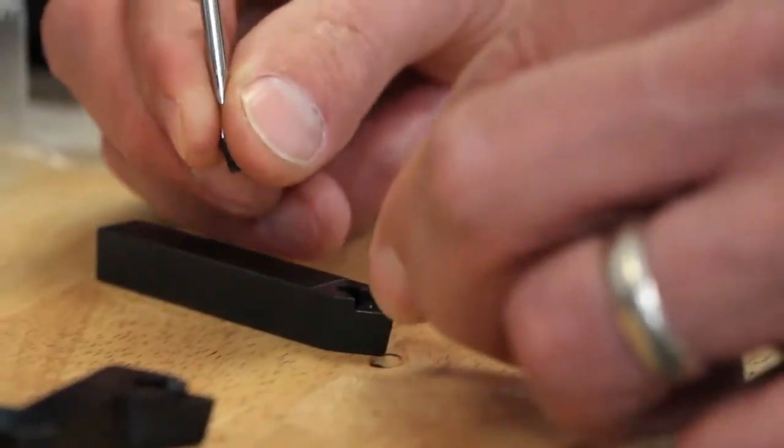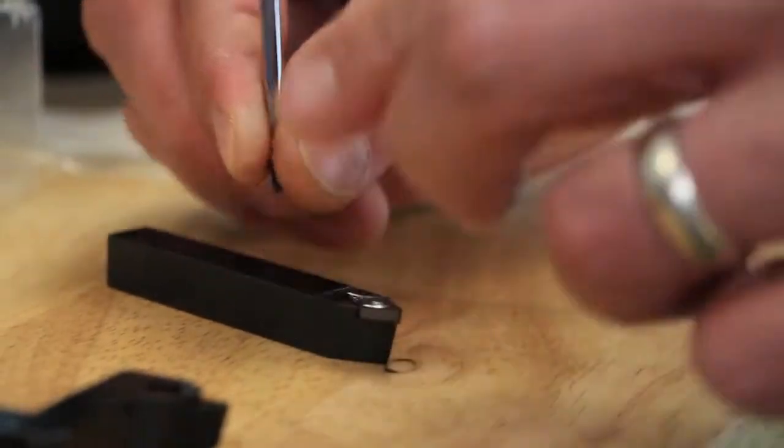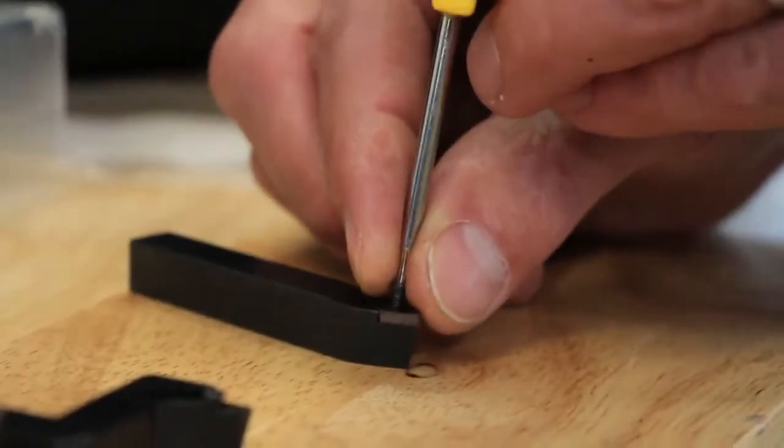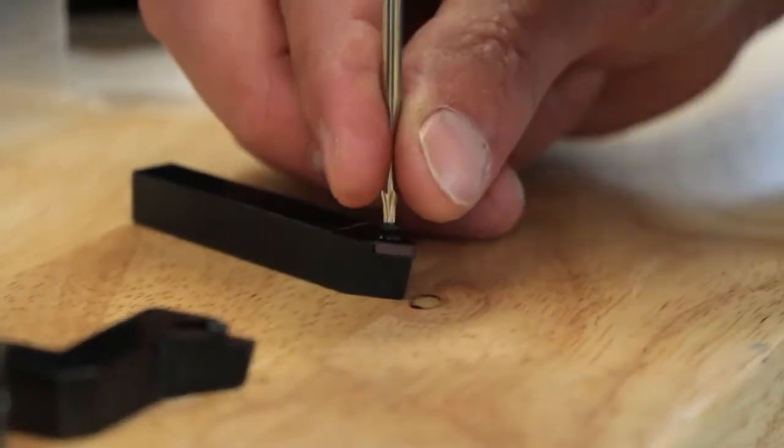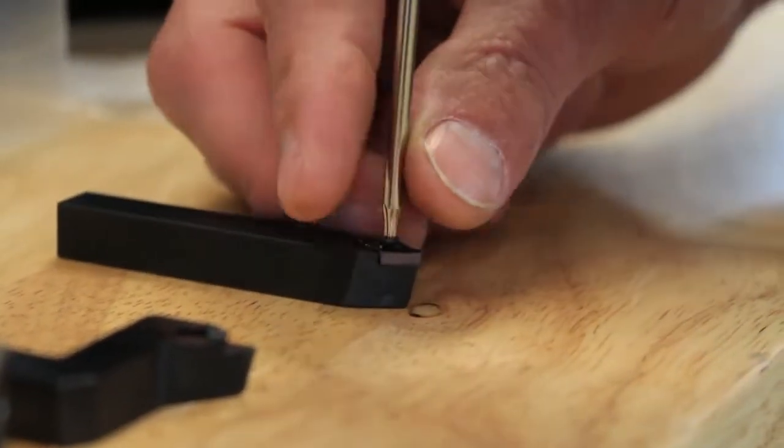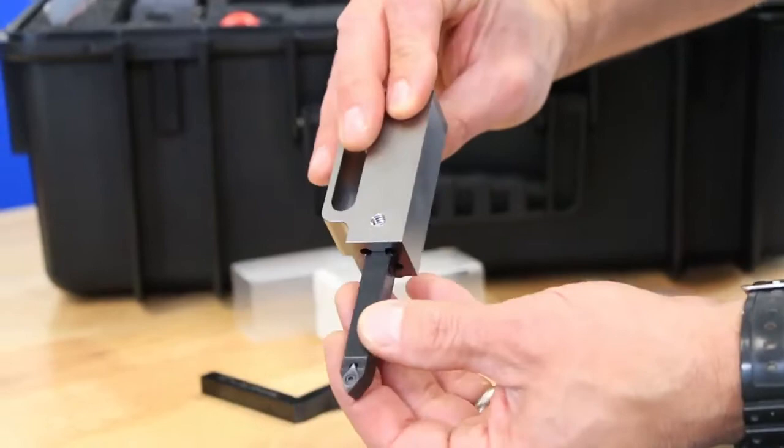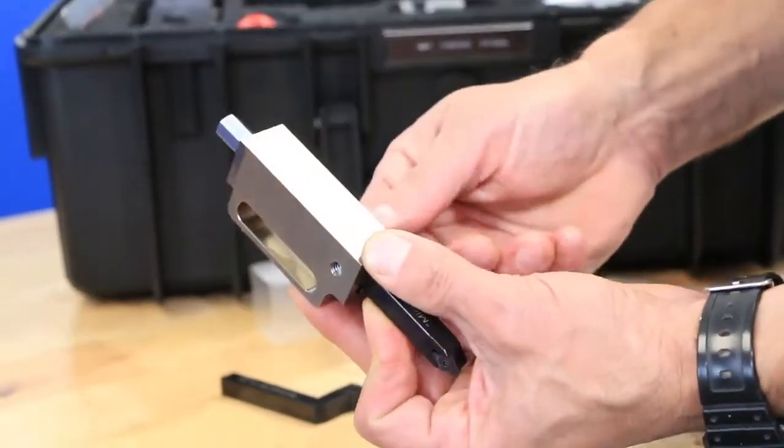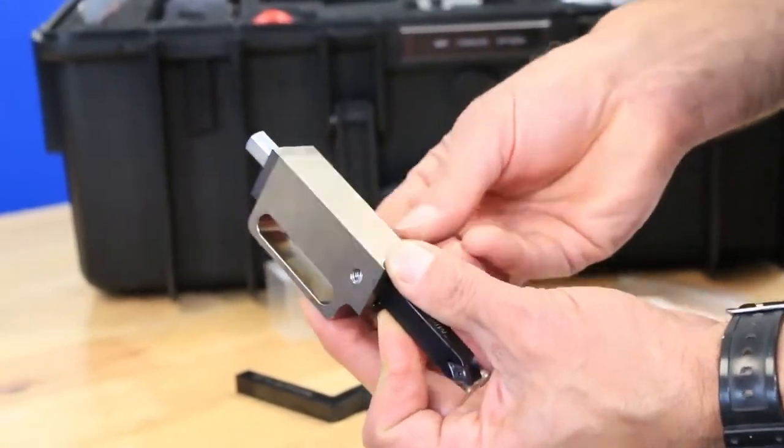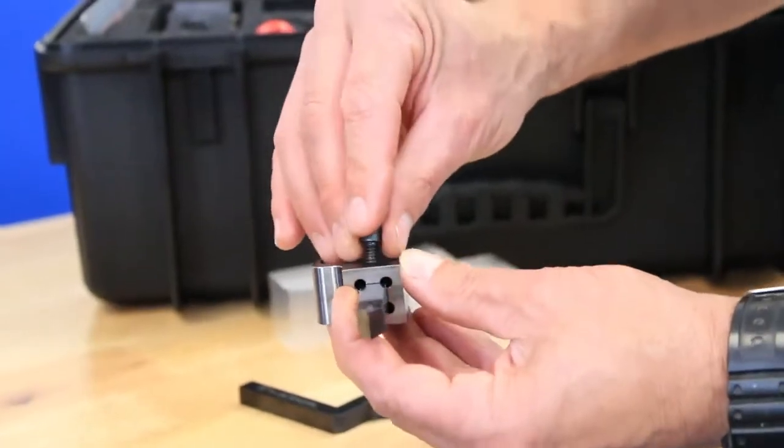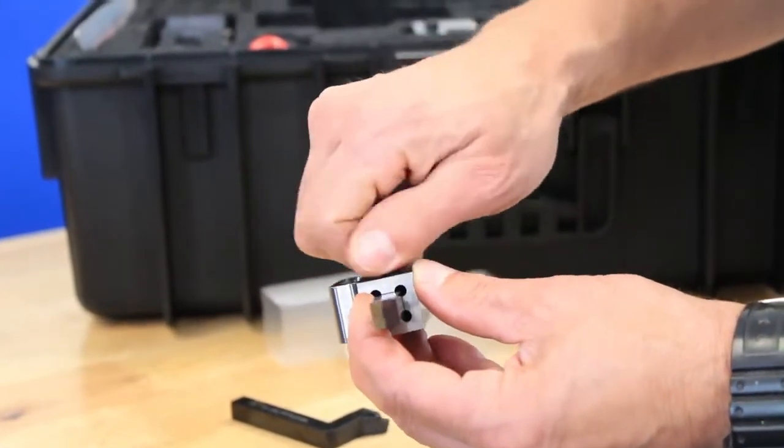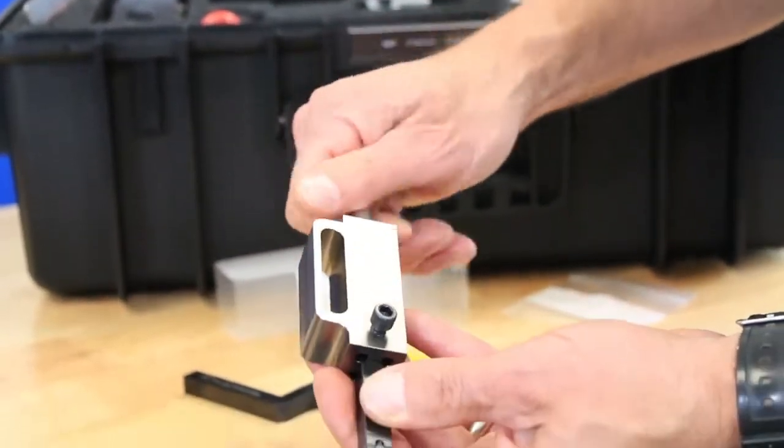Attach the insert to the insert holder using the torx wrench and screws found in the plastic insert holder case. Keep in mind that the quarter inch inserts are double sided and can be flipped over when one side becomes dull. Now attach the insert holder to the tool post assembly in whichever orientation suits your flange size. The black screw that holds the insert holder in place should be snug but not tight to allow the insert holder to be advanced while minimizing movement.